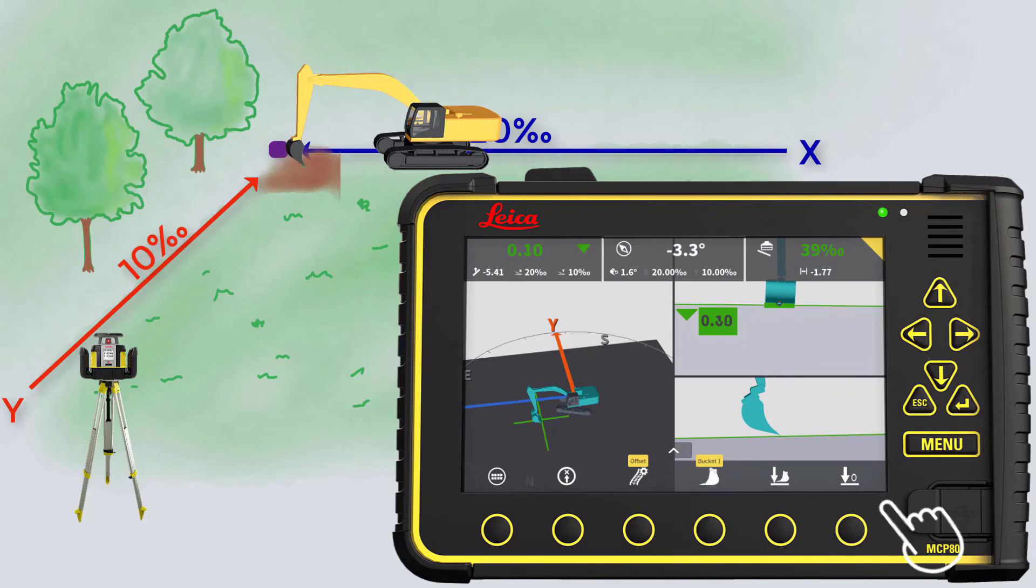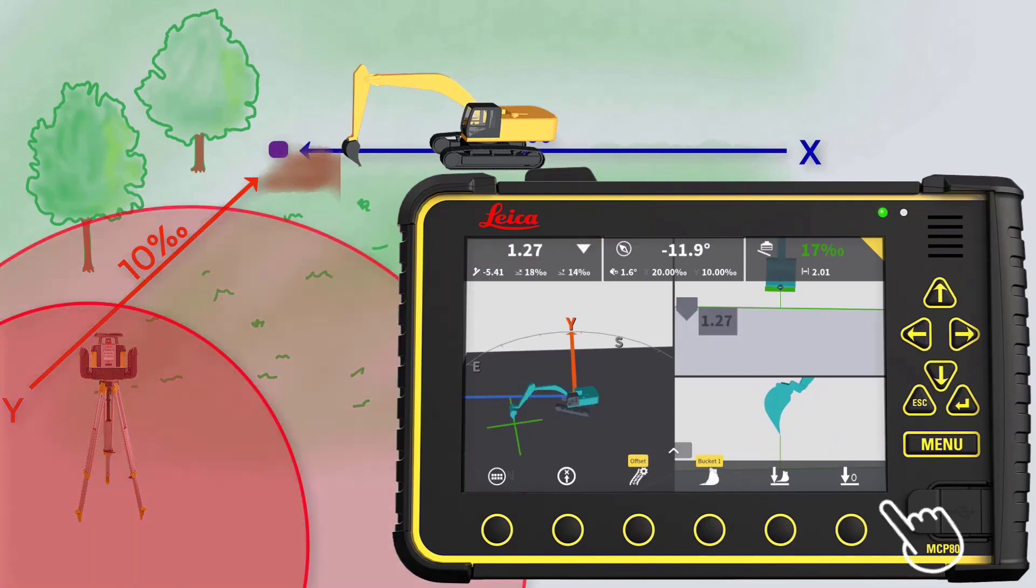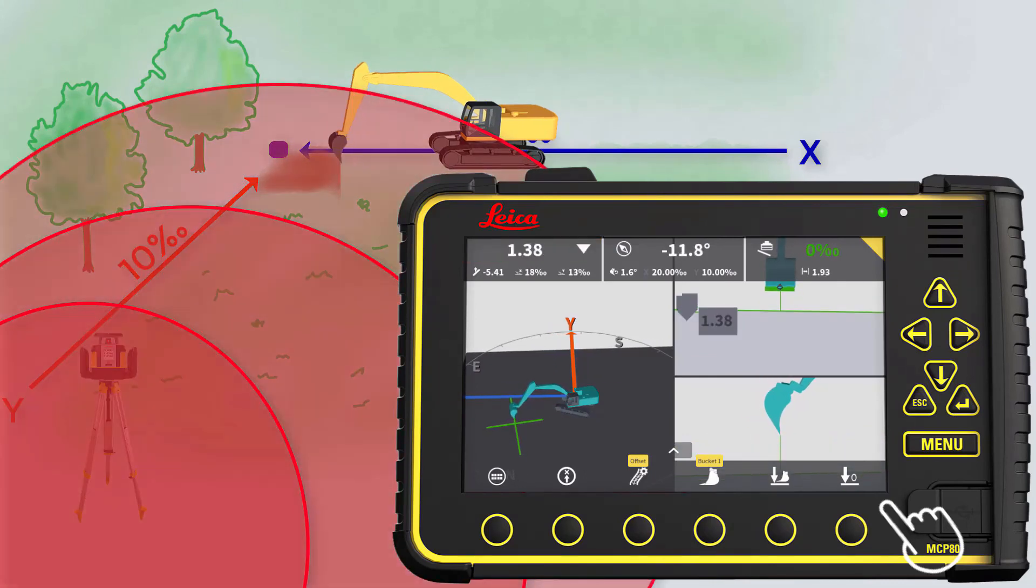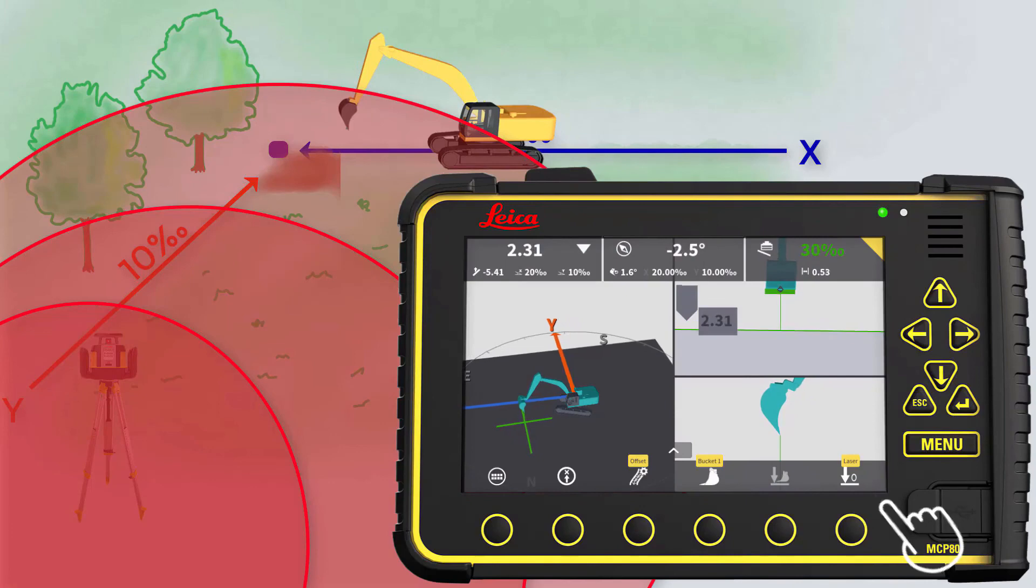When you need to move your machine, then do the following. Move the machine to the new position. Position your boom and stick until the laser catcher registers the laser beam. Press laser zero and get back to work.